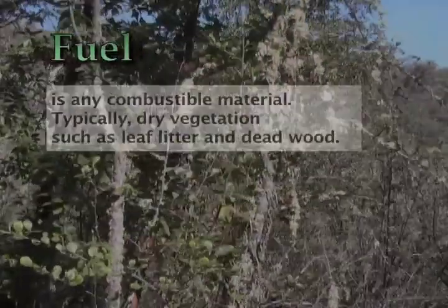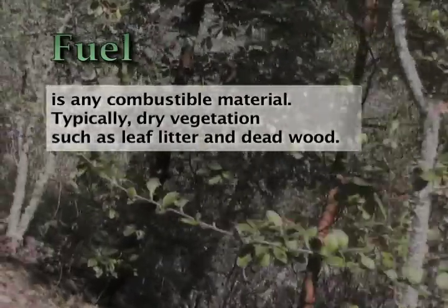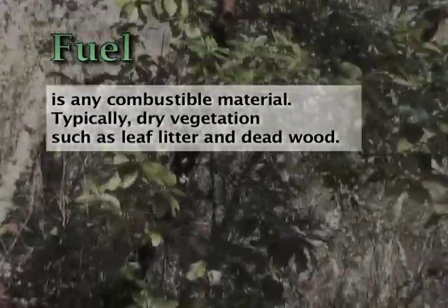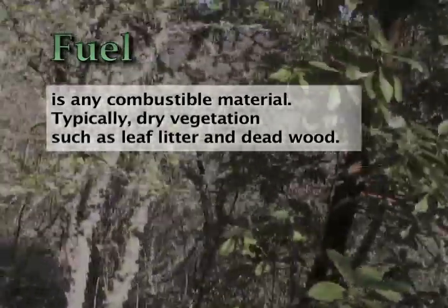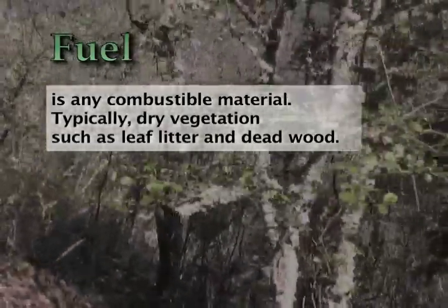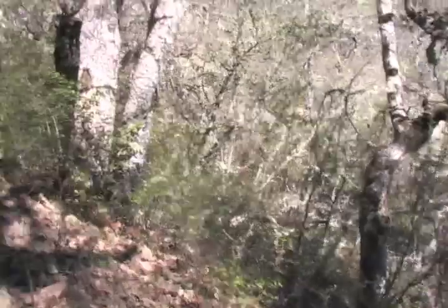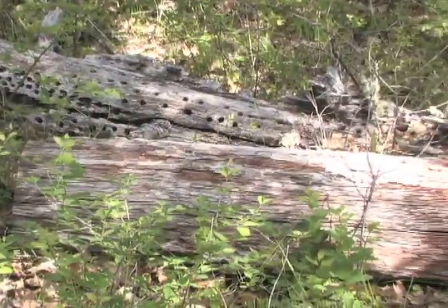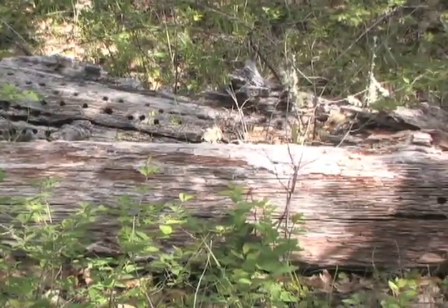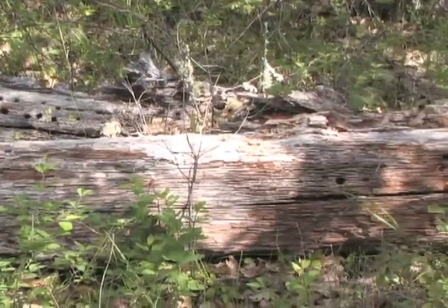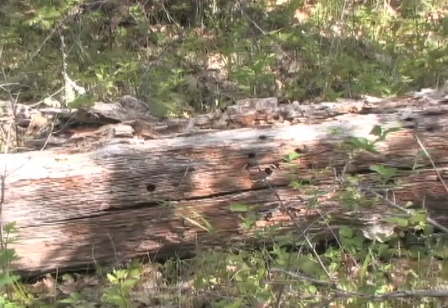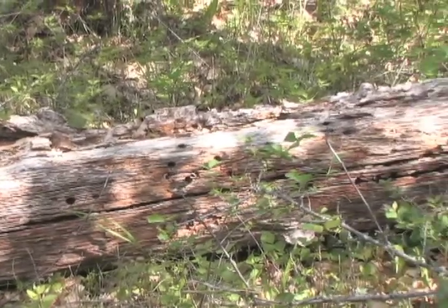Fuel simply refers to the combustible material that burns, and in the case of a forest fire, typically consists of vegetation. Dead, dry vegetation, such as leaf litter or dead wood, is usually more flammable than living tissue.